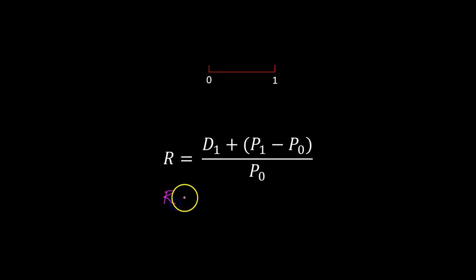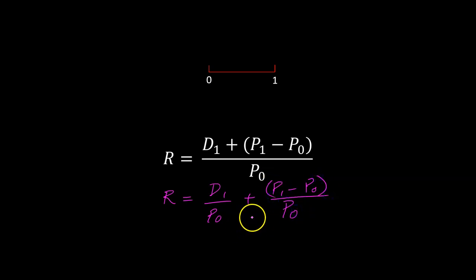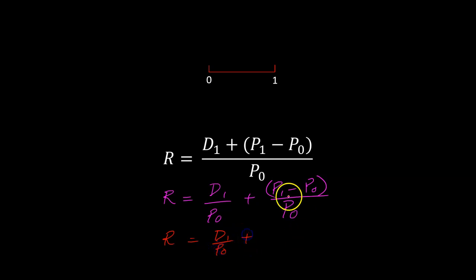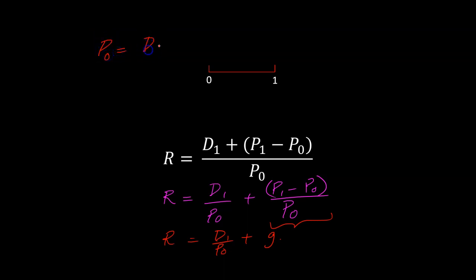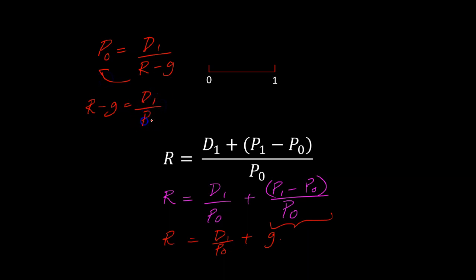Going back to the total return equation — dividend yield plus capital gains, or D1 over P0 plus (P1 minus P0) over P0 — the Gordon growth model implies that the capital gains component equals exactly G. You can verify this algebraically: starting from P0 equals D1 divided by (R minus G), rearrange to get (R minus G) equals D1 over P0, and therefore R equals D1 over P0 plus G. That's exactly the result: your required return R equals dividend yield D1/P0 plus the growth rate G.